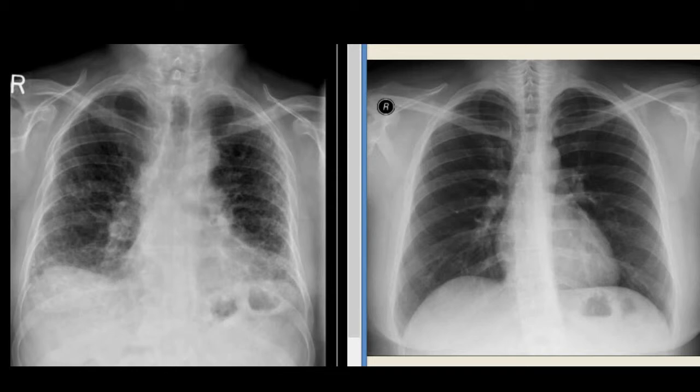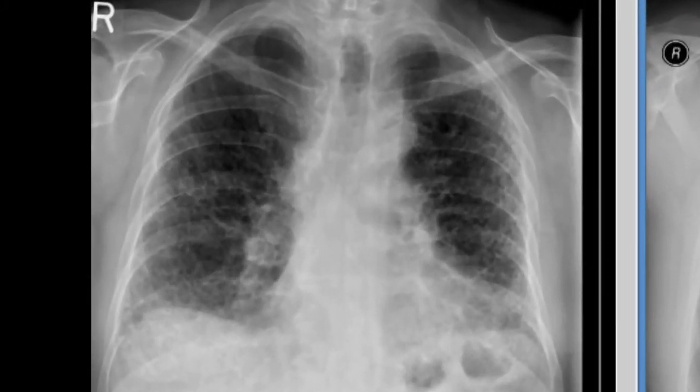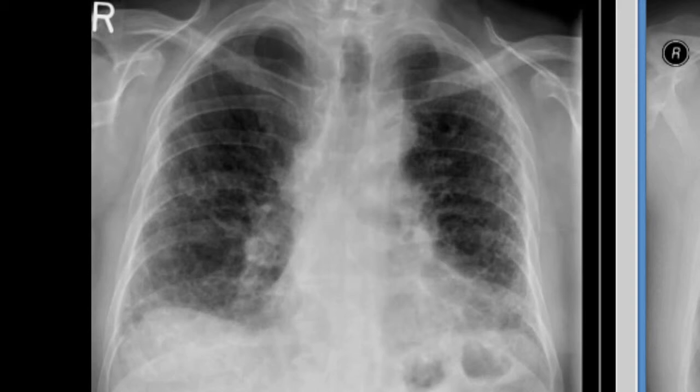Looking at the lung parenchyma, you can confidently say that there are multiple cysts scattered throughout both lungs, commonly known as honeycombing. Also notice the reticular pattern on both sides. The honeycombing is more profound in the lung bases compared to the apices. Honeycombing at the bases, traction bronchiectasis, architectural distortion, and reticular or reticulonodular pattern are all classic signs of lung fibrosis.